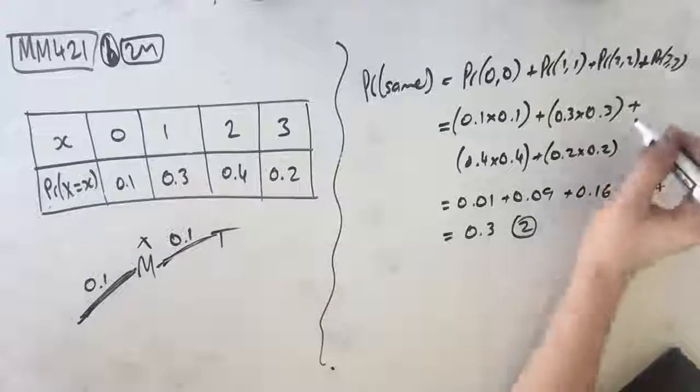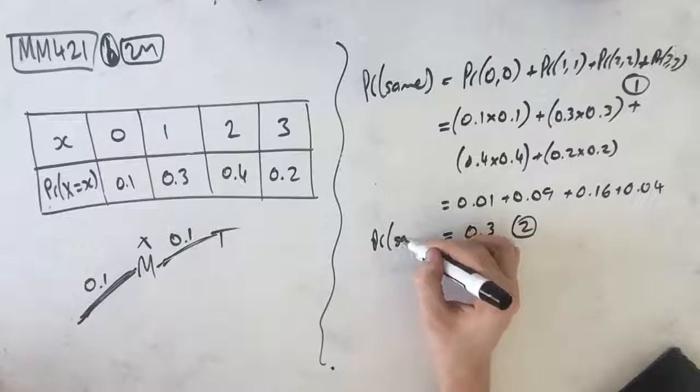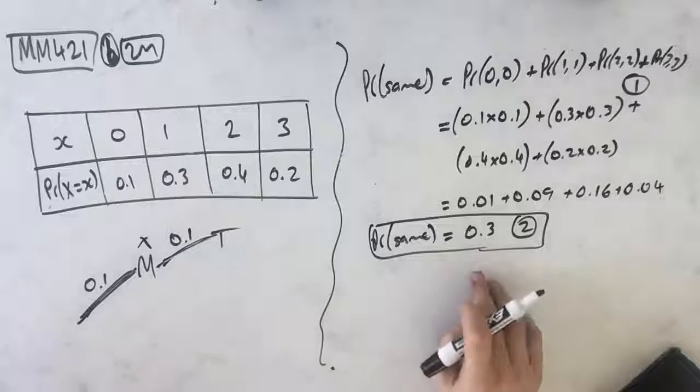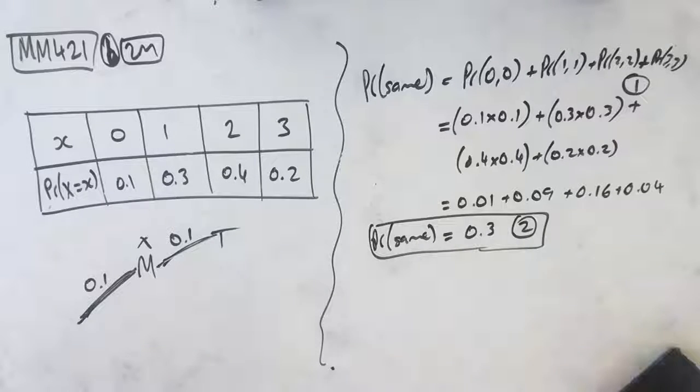So that's our second mark. Our first mark comes when we actually recognize what to do. So the probability that they're both the same is equal to 0.3. That's it for part B. That actually wraps up MM421.